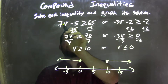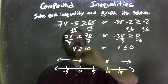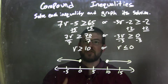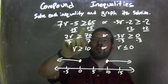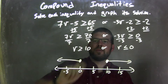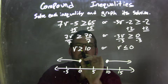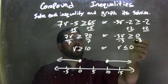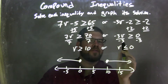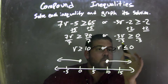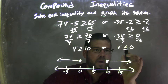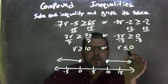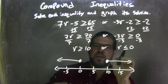So, as a recap: we were given 7V minus 5 is greater than or equal to 65, or negative 3V minus 2 is greater than or equal to negative 2. I had to solve each inequality individually. I added 5 to both sides and divided by 7, leaving me with V is greater than or equal to 10. On the right side, I added 2 to both sides and divided by negative 3. The key part: when dividing by negative 3, I need to flip the inequality. So V is greater than or equal to 10, or V is less than or equal to 0. Those are our two parts, and V is isolated in both.